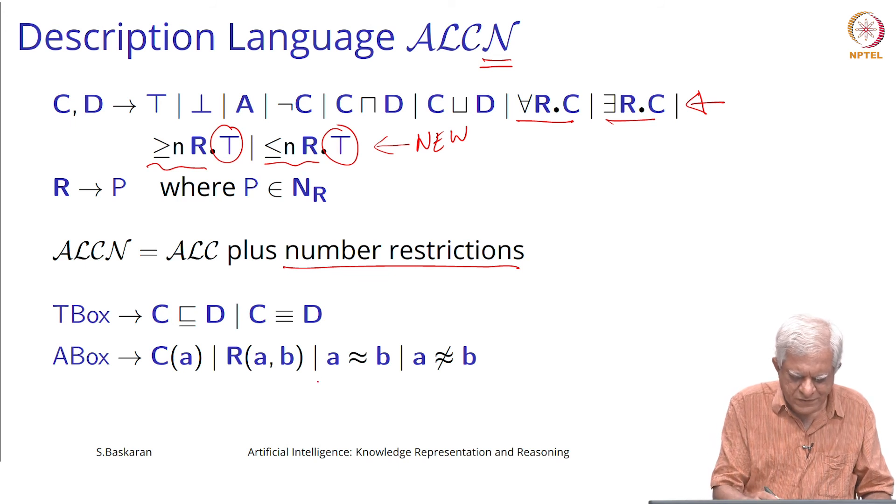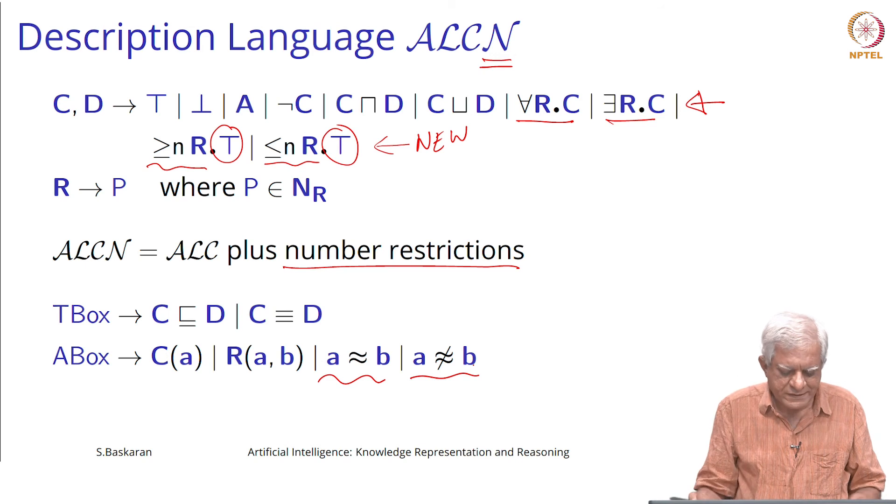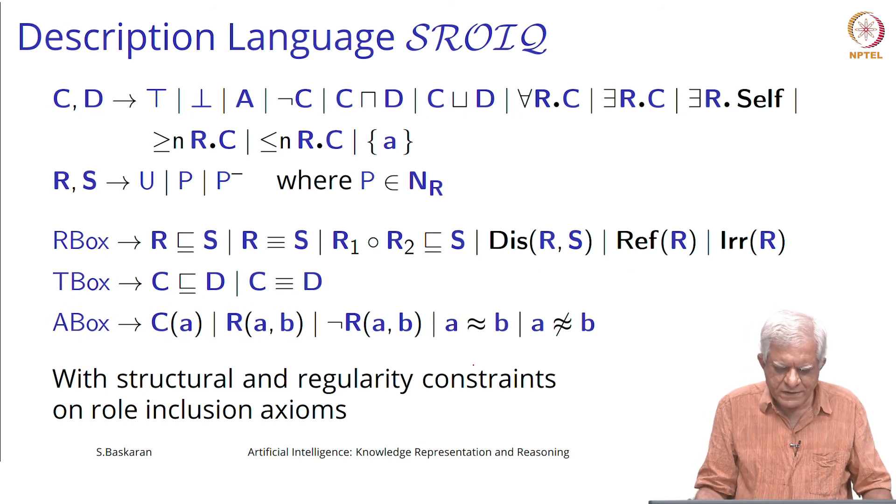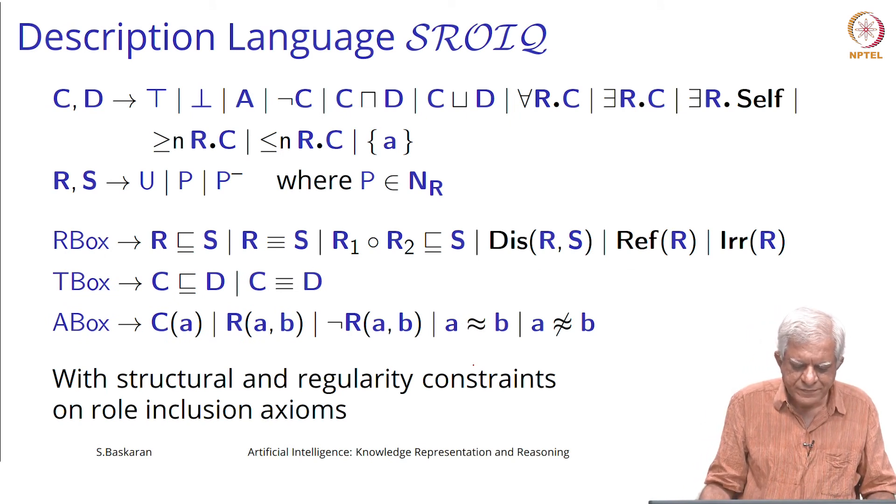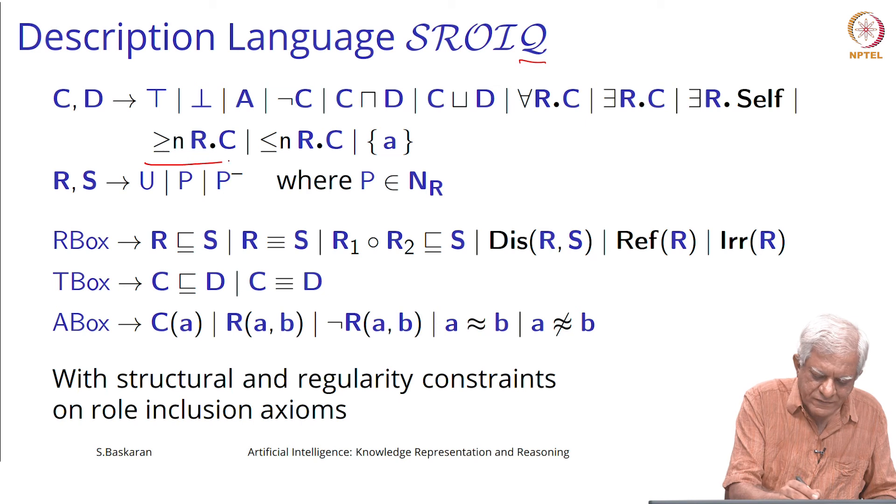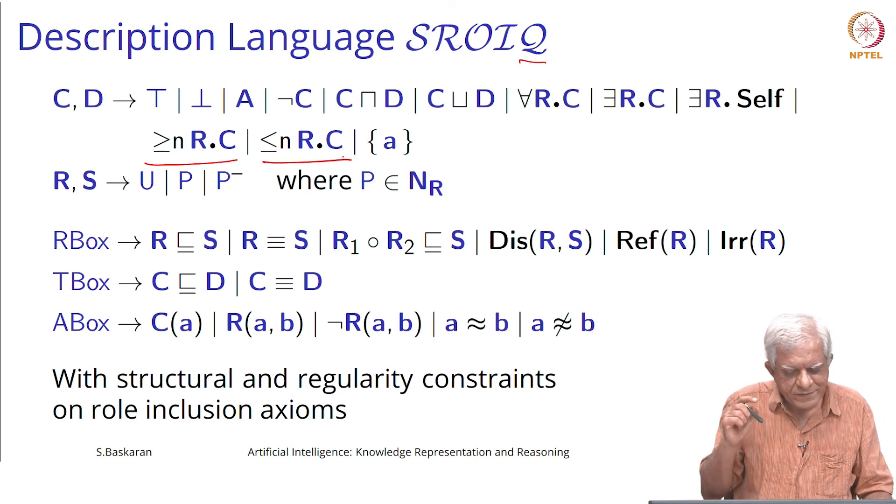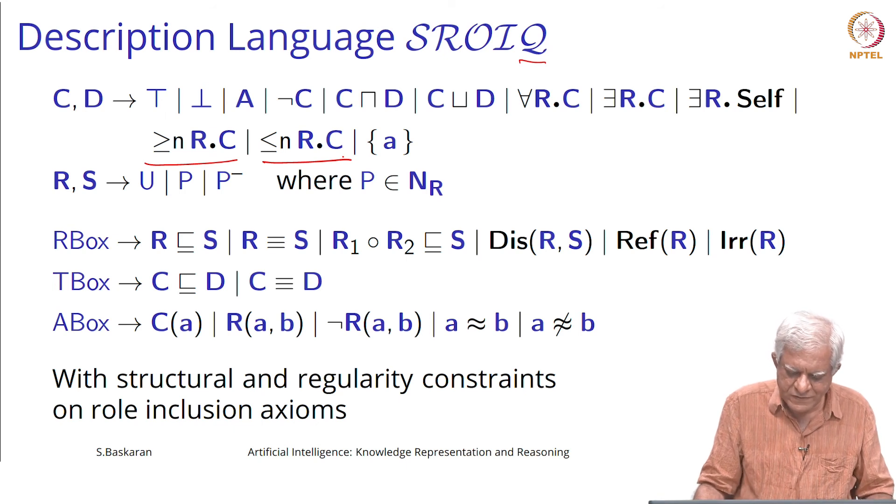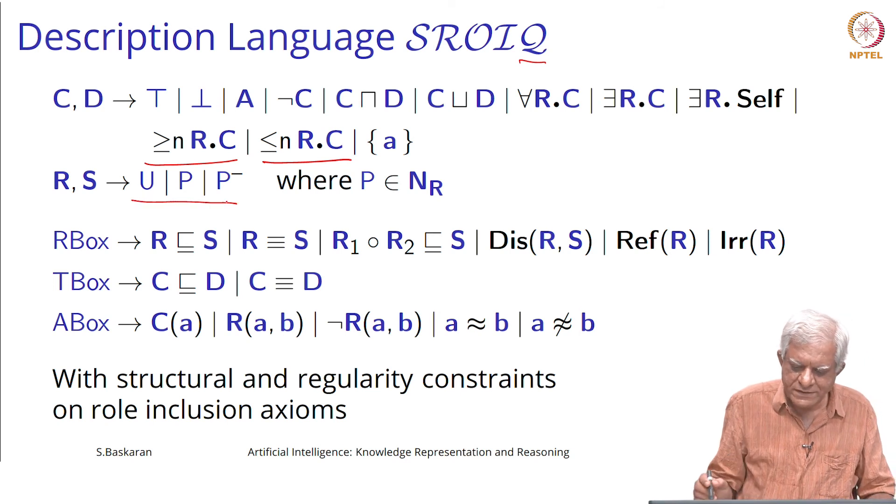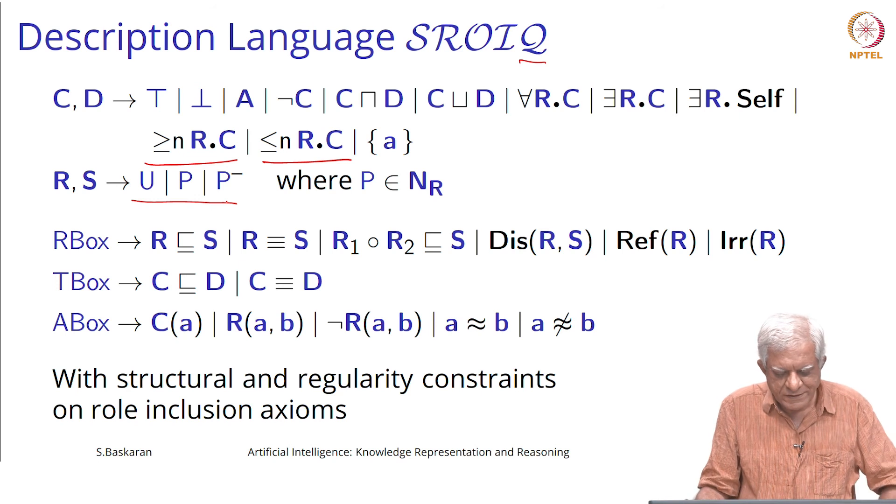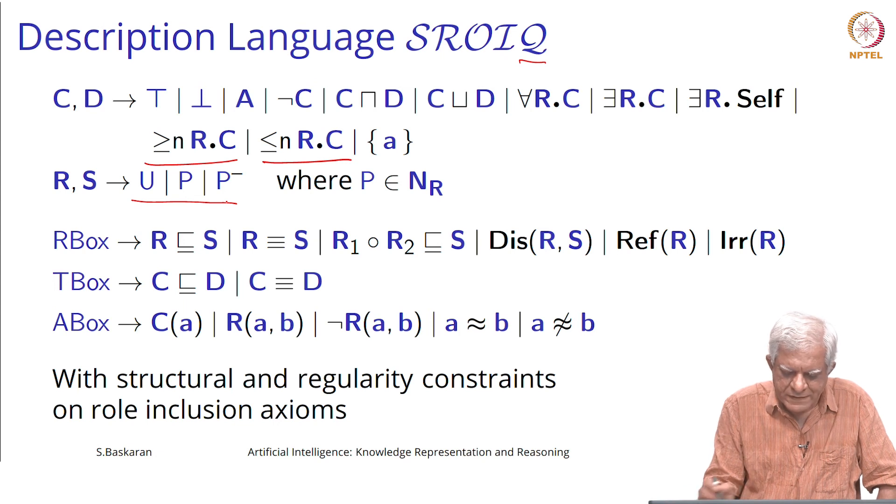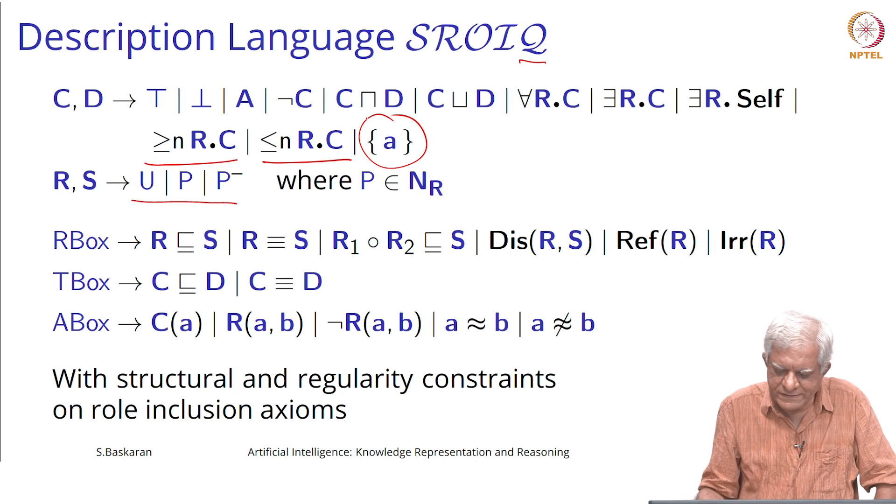We can also talk about individuals being the same or not being the same. Then we have SROIQ. Remember Q stands for qualified number restrictions. We have this now, and we have this now, which was not there in the ALCN that we saw just now. Also, we can talk about role inverses here, so that R has come in because of that, and we can enumerate sets. We can define enumerated sets.